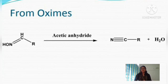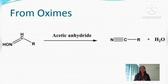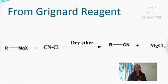Another method of preparation is from an oxime. An oxime is a condensation product obtained by reacting an aldehyde with hydroxylamine (NH₂OH), with elimination of water. When this oxime is treated with acetic anhydride, an alkyl or aryl cyanide is obtained with elimination of a water molecule.